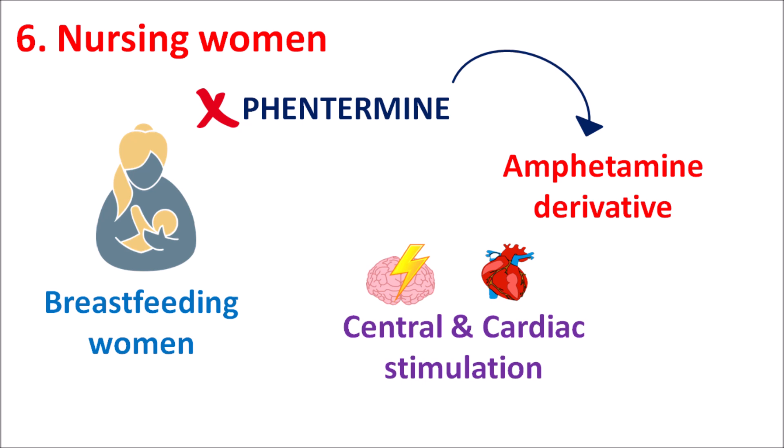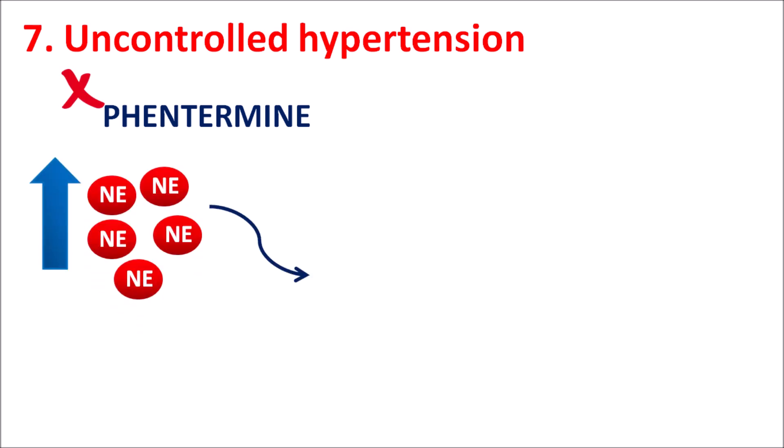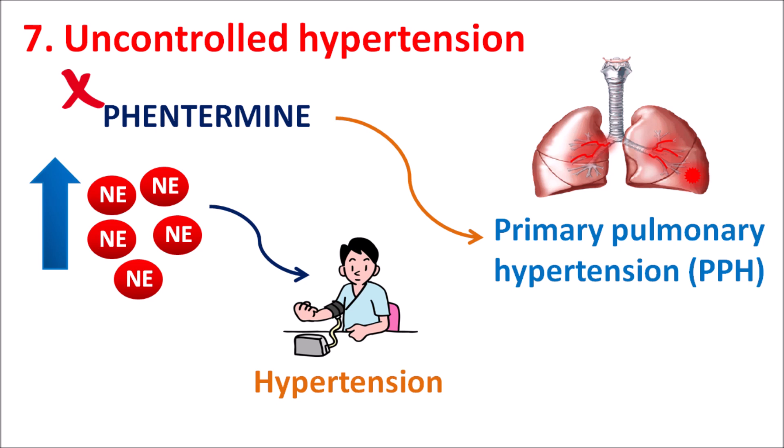The seventh contraindication is uncontrolled hypertension. Phentermine can be given in patients with controlled hypertension where blood pressure is managed through exercise, diet, or medication, but in patients with uncontrolled hypertension it is contraindicated. Since this drug increases norepinephrine levels, it can raise blood pressure. It can also increase primary pulmonary hypertension (PPH), where elevated pulmonary vascular pressure causes dyspnea and edema — a fatal condition.